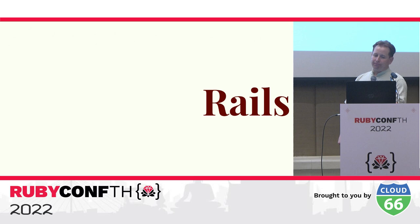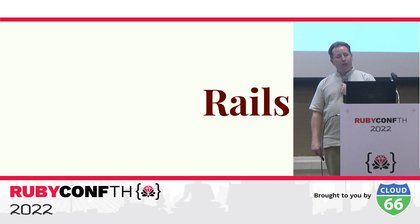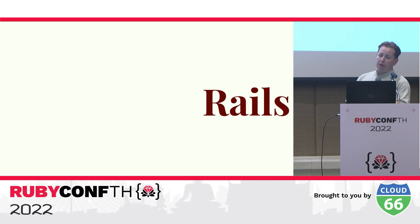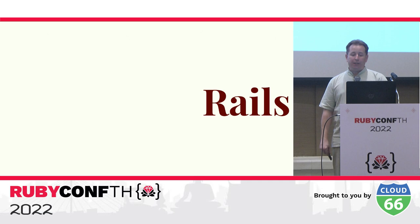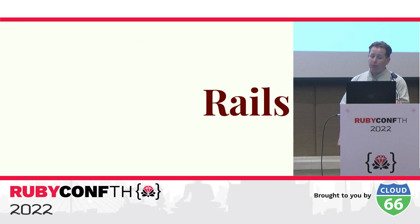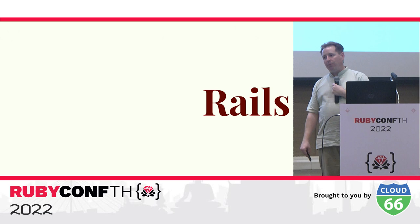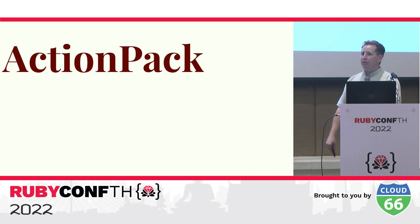Some Ruby programmers believe that if you use something other than Rails you have to rebuild most of what Rails gives you. That may be true if you're using Sinatra, but it's definitely not true with Roda. In some cases Roda ships with an equivalent for the features that Rails offers, and in other cases there are superior third-party libraries that work with both Rails and Roda. ActionPack is the heart of Rails, implementing the routing and handling of requests — core Roda and many of the routing plugins that ship with Roda are a direct replacement for ActionPack.